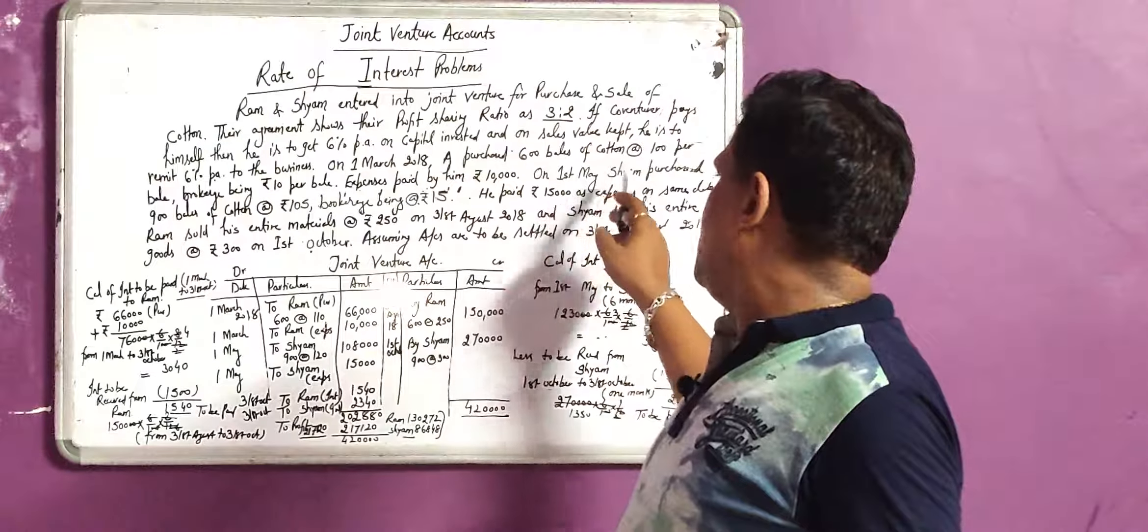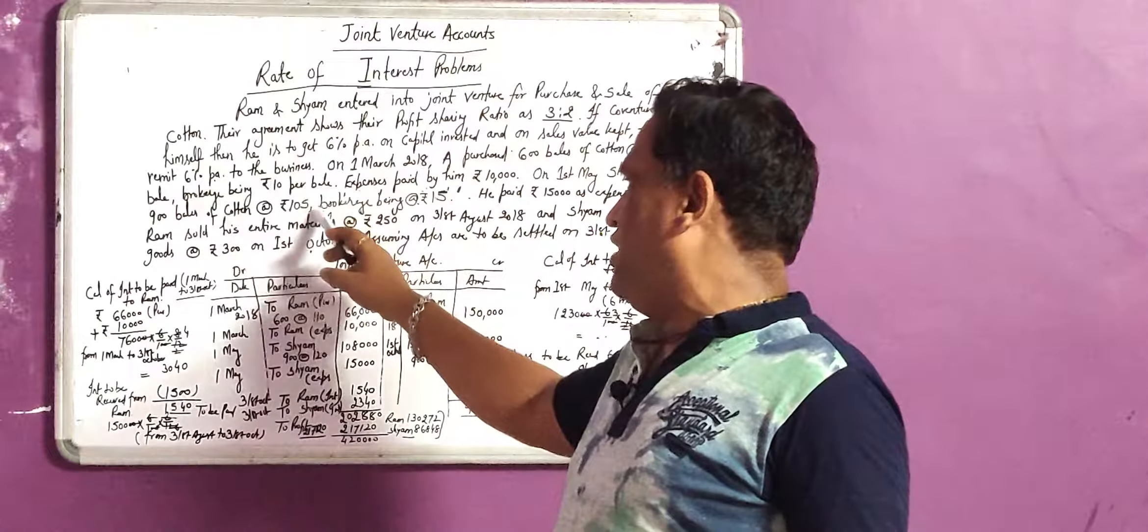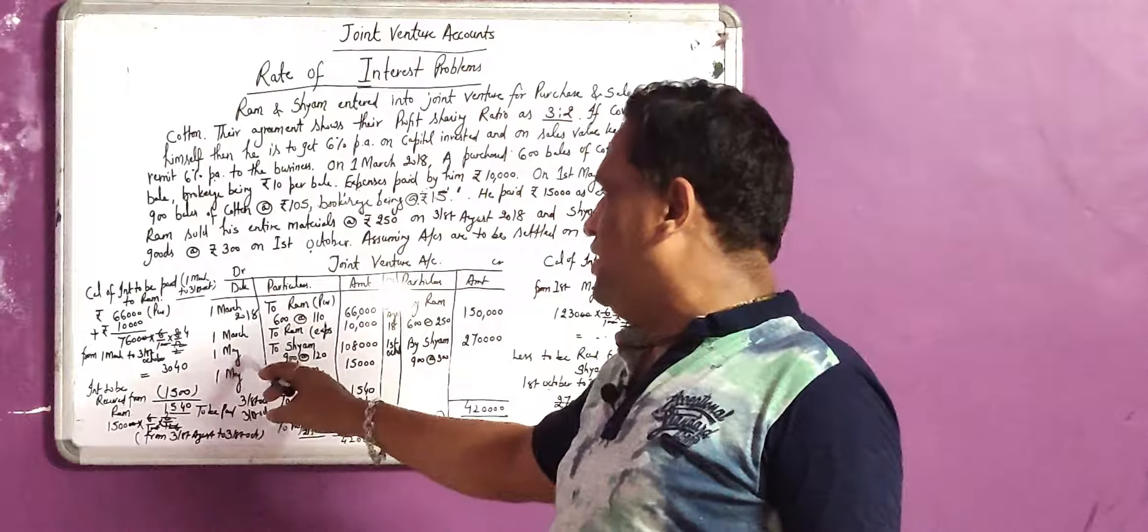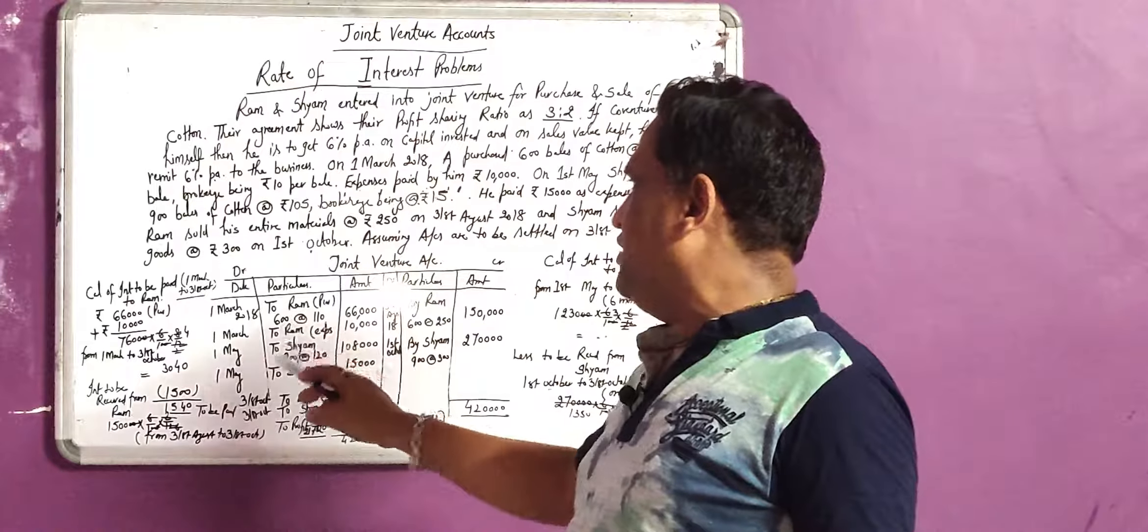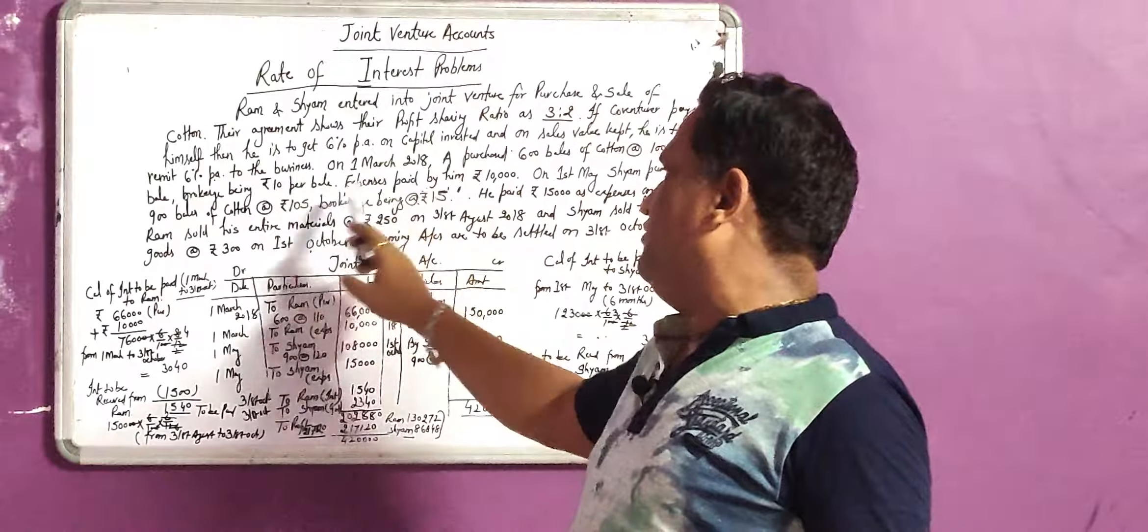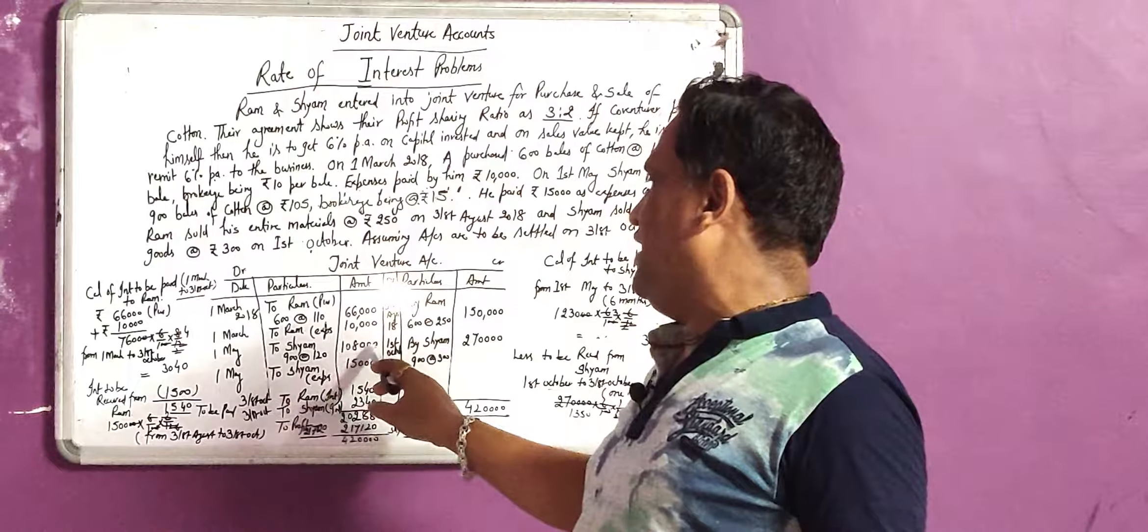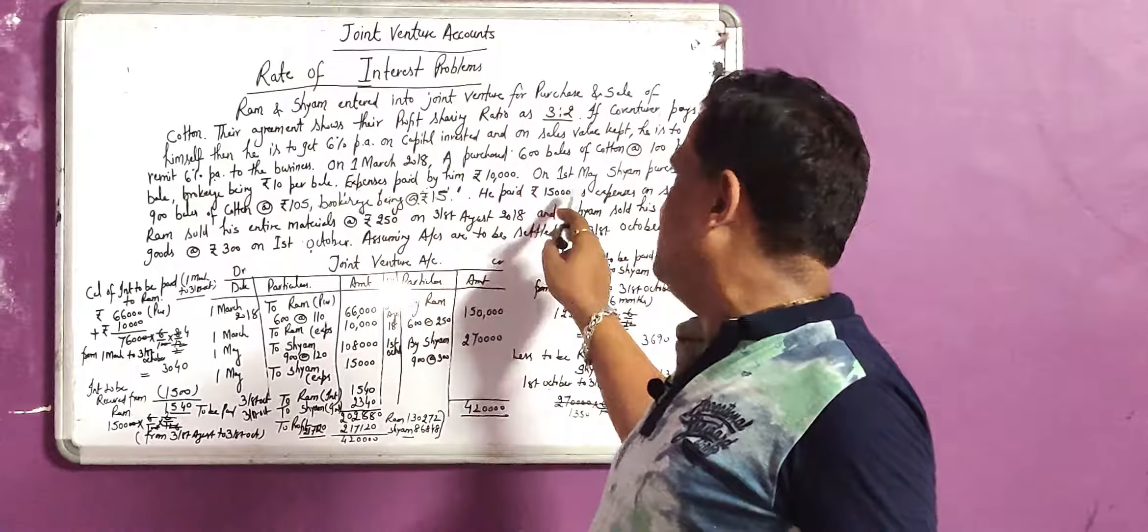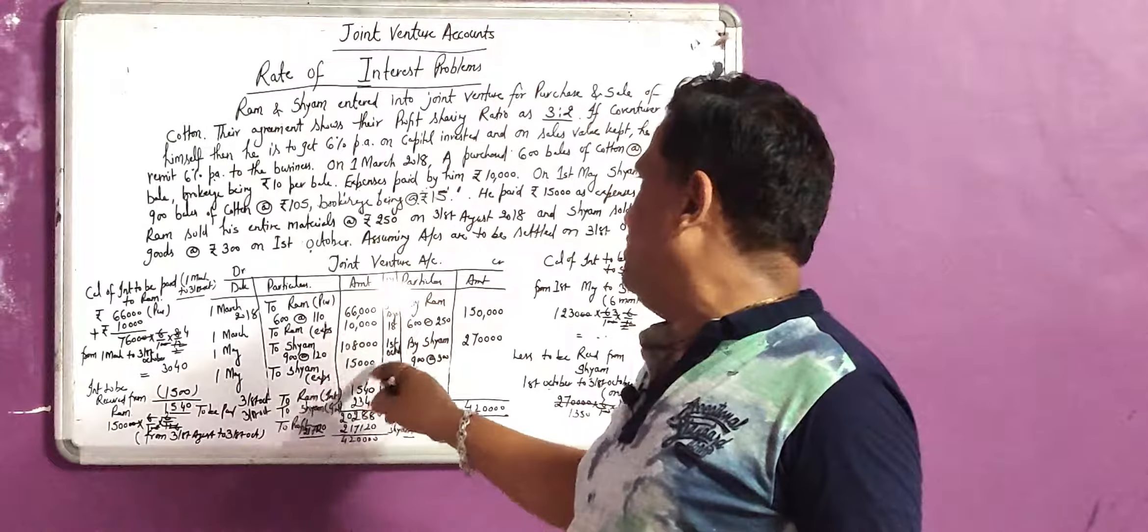On 1st May, Shyam purchased 900 bales of cotton at the rate of 105, brokerage being 15 rupees per bale. Shyam purchased 900 at 105 plus 15. Brokerage is always added to the cost price. It becomes 120. The total amount shall become 108,000. Similarly, Shyam paid expenses of 15,000. On 1st May, we will write to Shyam, expenses shall be 15,000.